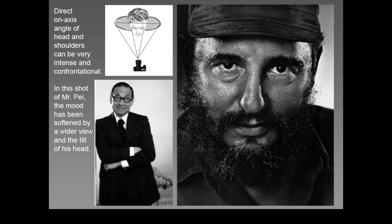A direct on-axis angle of head and shoulders can be very intense and confrontational. Yosef Karsh did these shots — Mr. Pei, the famous architect. The mood has been softened by a wider view and the tilt of his head, but he is a very thin man and he's looking right down at the camera with his shoulders focused on the camera too.